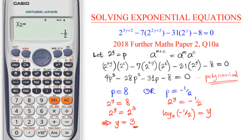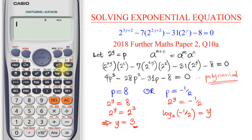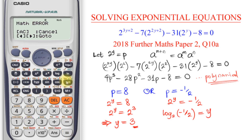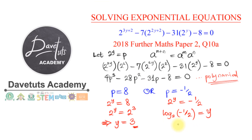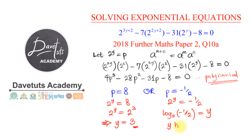I input log base 2 of negative 1 over 2 — and the calculator returns a math error. So we can say y has no real roots. Since this case is repeated twice, there are still no real roots for it, but for p equals 8 we get y equals 3.